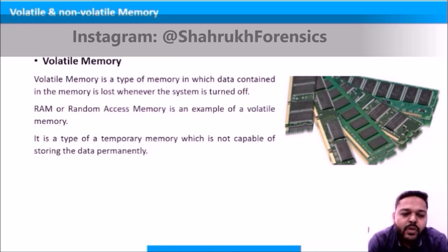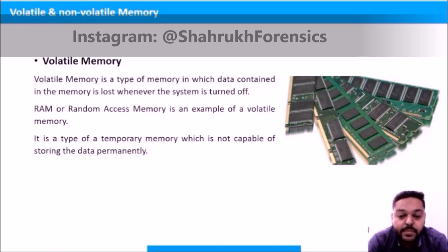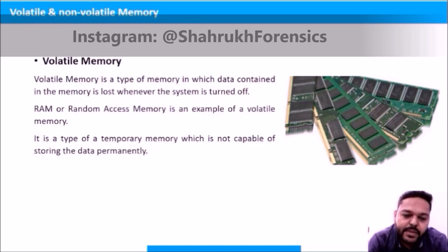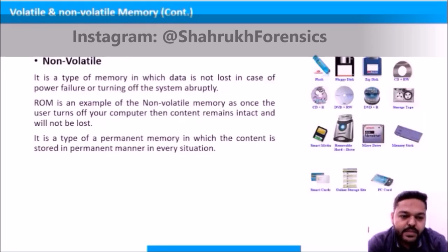RAM, or random access memory, is an example of volatile memory. It is a type of temporary memory which is not capable of storing data permanently — it cannot store the data permanently. This is volatile memory. Now, what is non-volatile memory?